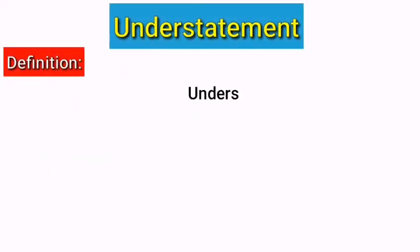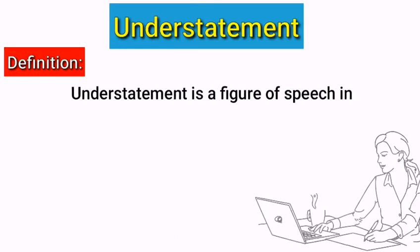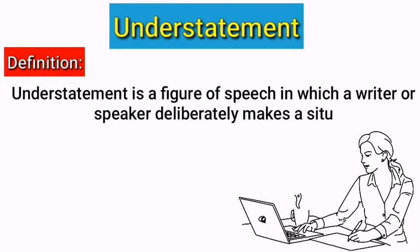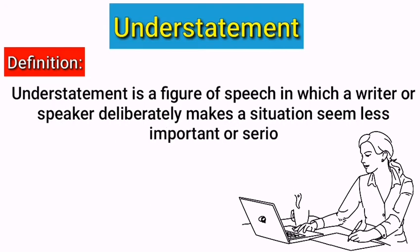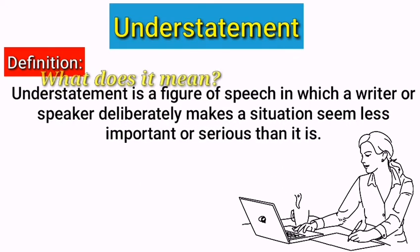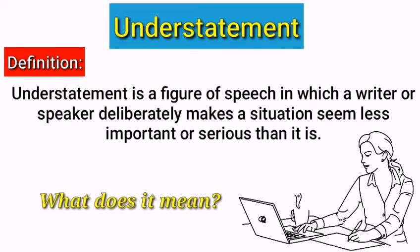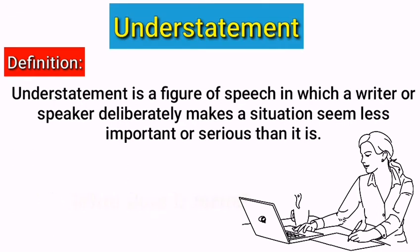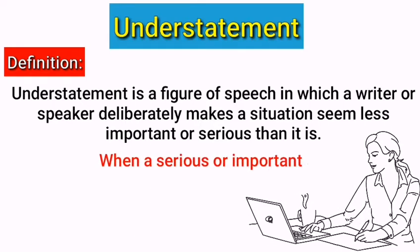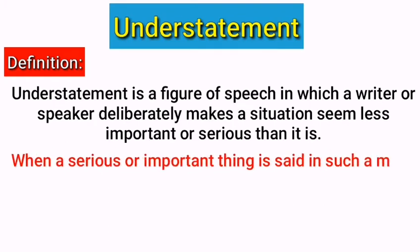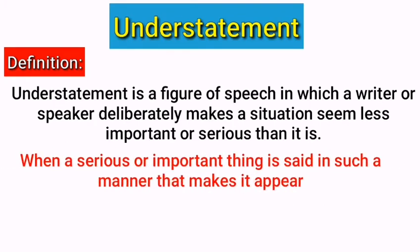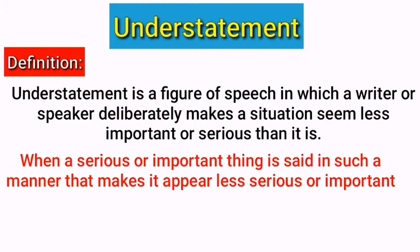It can be defined as: understatement is a figure of speech in which a writer or speaker deliberately makes a situation seem less important or serious than it is. Simply, it means that an understatement usually has an ironic effect, as an equally intense response is expected in severe situations. But the statement in response is the opposite of what was expected. As something serious or important happens and you talk about it in a manner that makes it appear less serious or less important, so then it is called understatement.